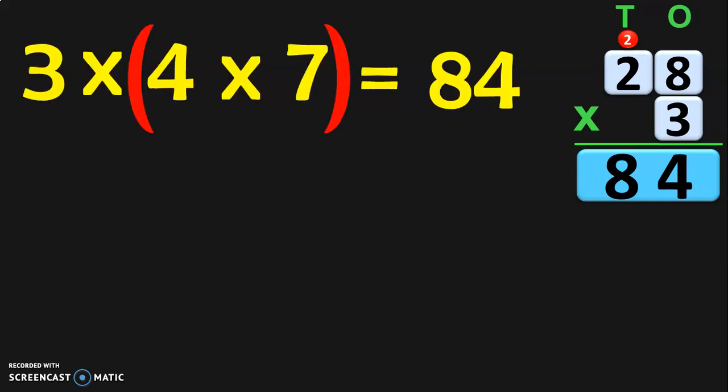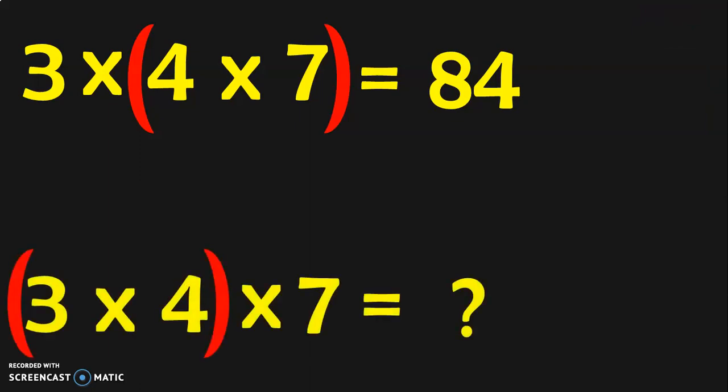Let us write down the original sum: 3 into 4 into 7 is equal to 84. We simplified 4 into 7 as 28. The rule says that three numbers can be grouped in any order and their product will remain the same. We have grouped the first time as 4 into 7. Now we are going to group 3 into 4 as a single group.